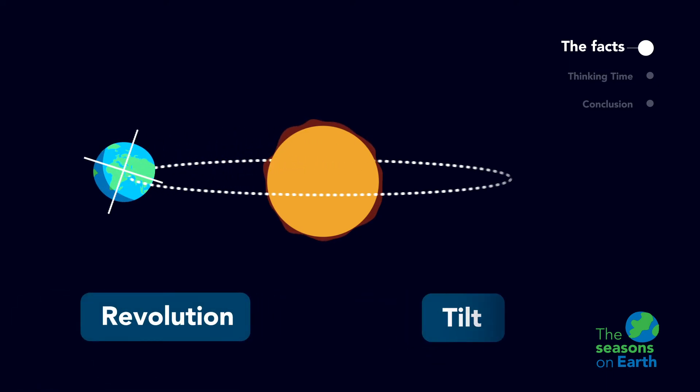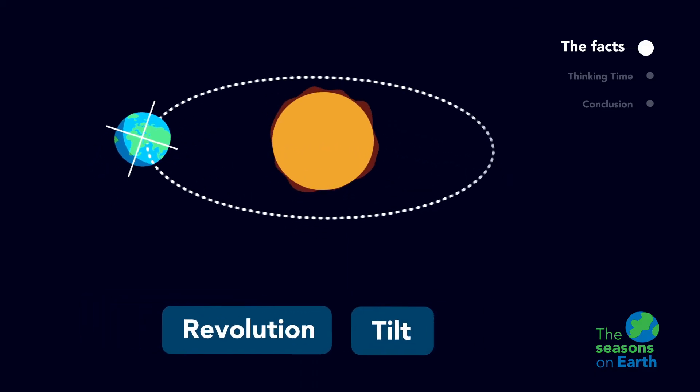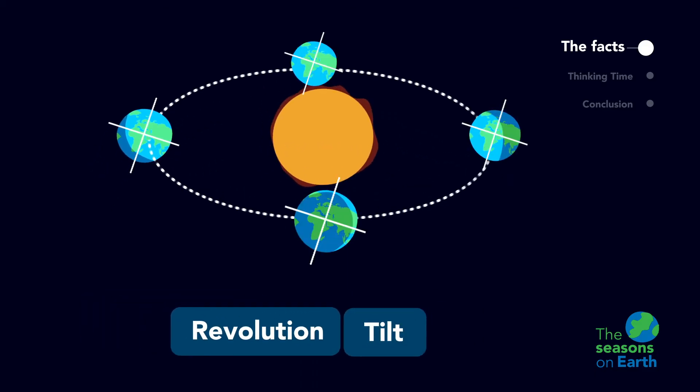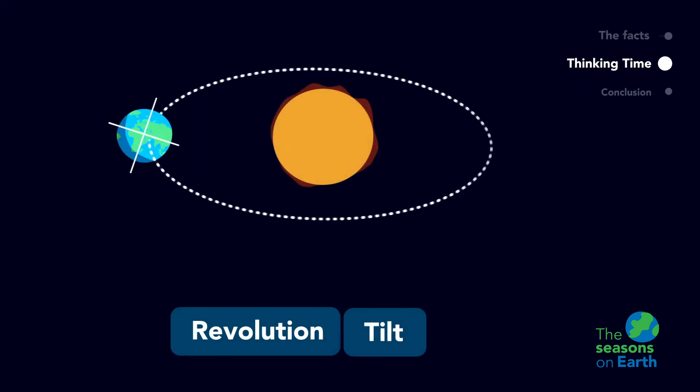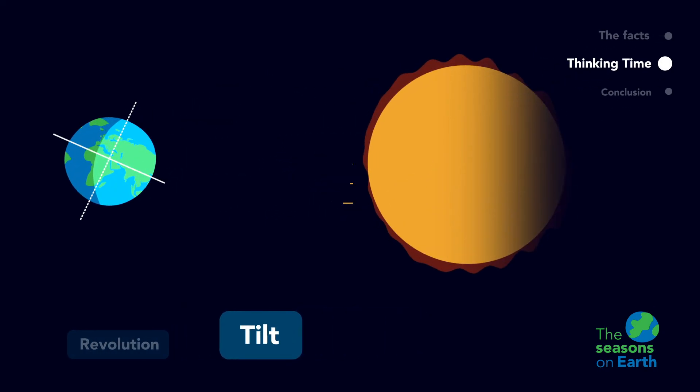The revolution and tilt of the earth work together to create the seasons. The earth's tilt means that sunlight doesn't hit everywhere equally. Instead, one hemisphere receives direct sunlight, while the other receives indirect sunlight. Right now, which hemisphere do you think has warmer weather? The northern hemisphere or the southern hemisphere?